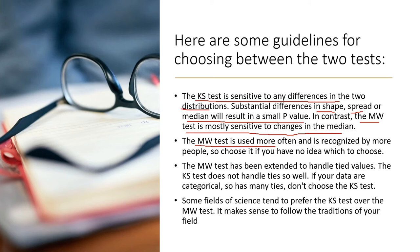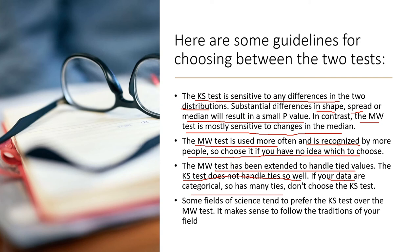The Mann-Whitney test is used more often and is popular among researchers. It is a very important non-parametric alternative and most of the time researchers use it without hesitation. Additionally, the Mann-Whitney test has been extended to handle tied values as well. In the case of the KS test, tied values cannot be handled as effectively, so if your data is categorical with many ties, it is better to use the Mann-Whitney test.